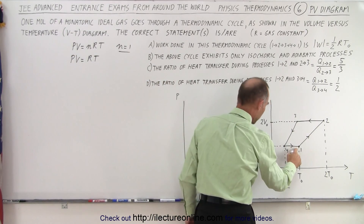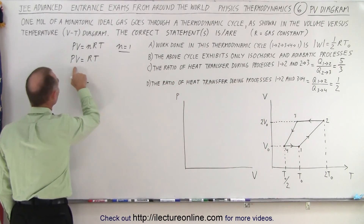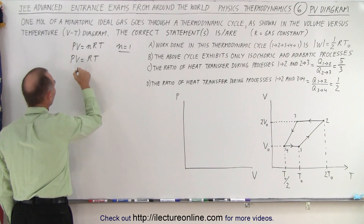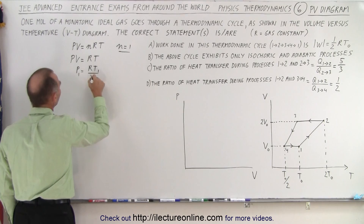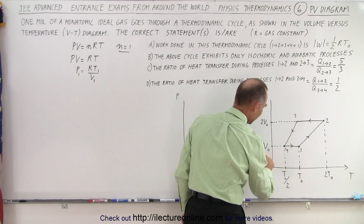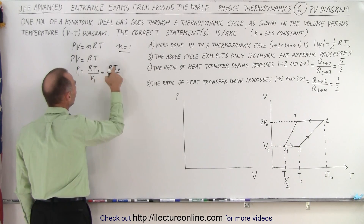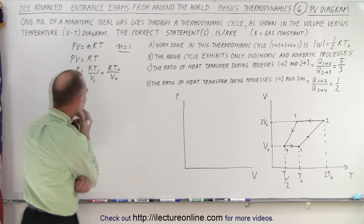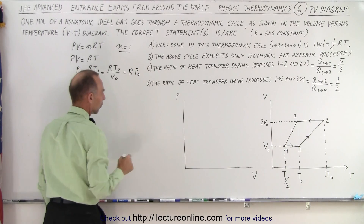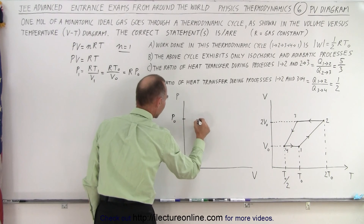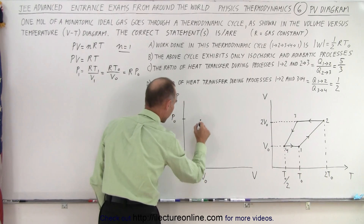At state one, the initial volume is V₀ and the initial temperature is T₀. So P₁ = RT₁/V₁ = RT₀/V₀. We can call this P₀, where P₀ = RT₀/V₀. So at state one, we have pressure P₀ and volume V₀.